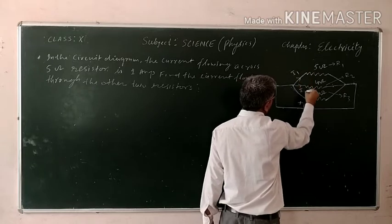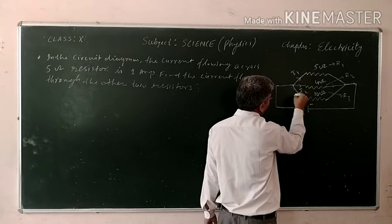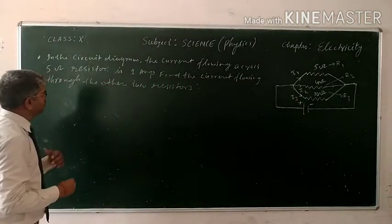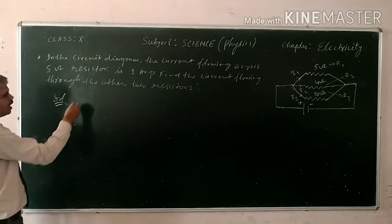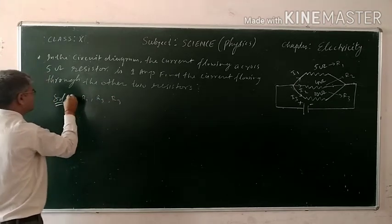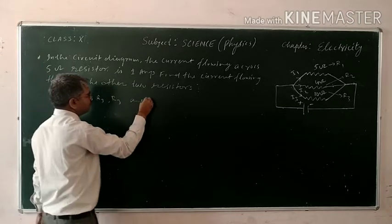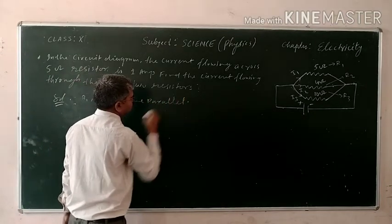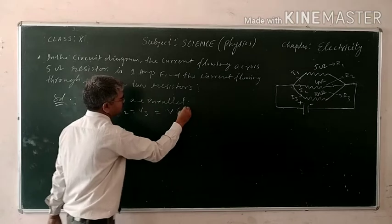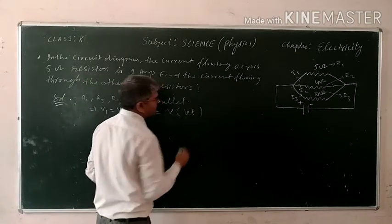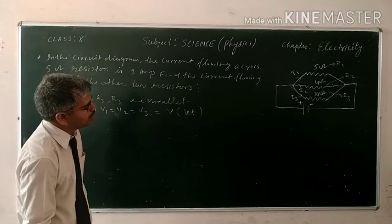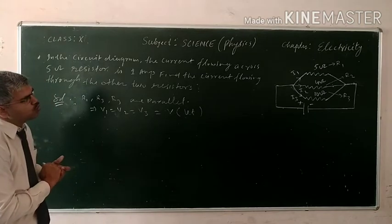So we know that R1, R2, R3, since R1, R2, R3 are parallel, potential across each resistor is equal in magnitude.